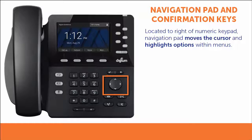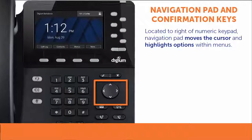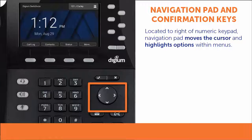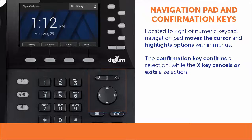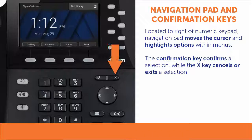A four-way navigation pad is located to the right of the numeric keypad. It allows you to move the cursor and highlight options within the phone's menus. Above the navigation pad are the confirmation and X keys. In most cases, the confirmation key is used to confirm a selection, and the X key is used to cancel or exit.